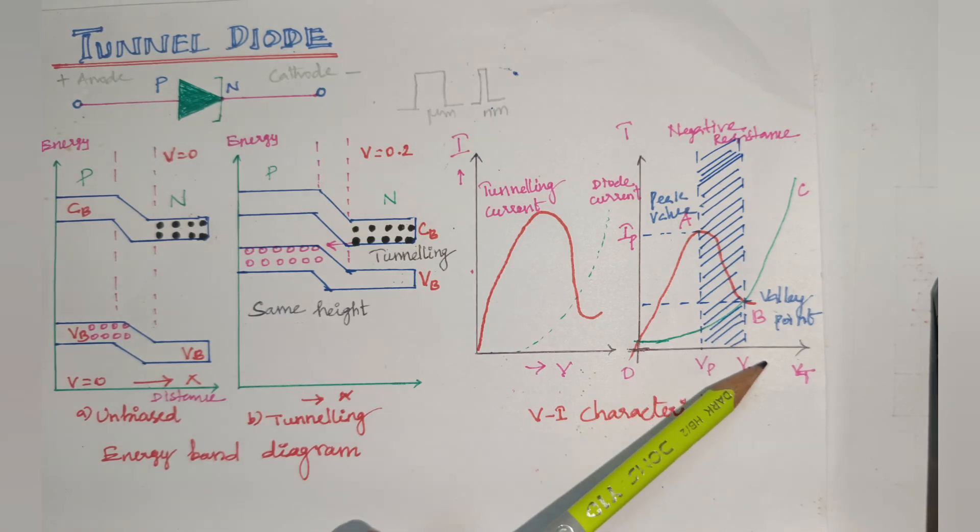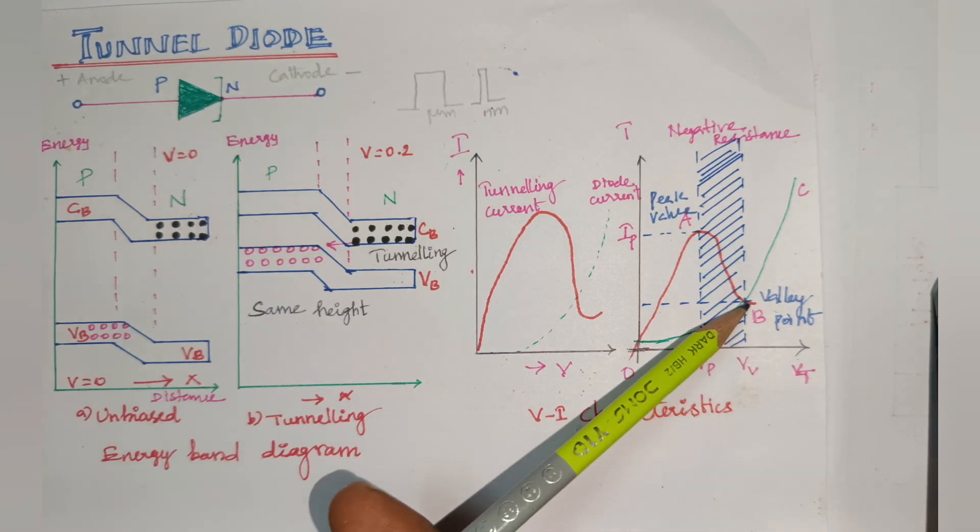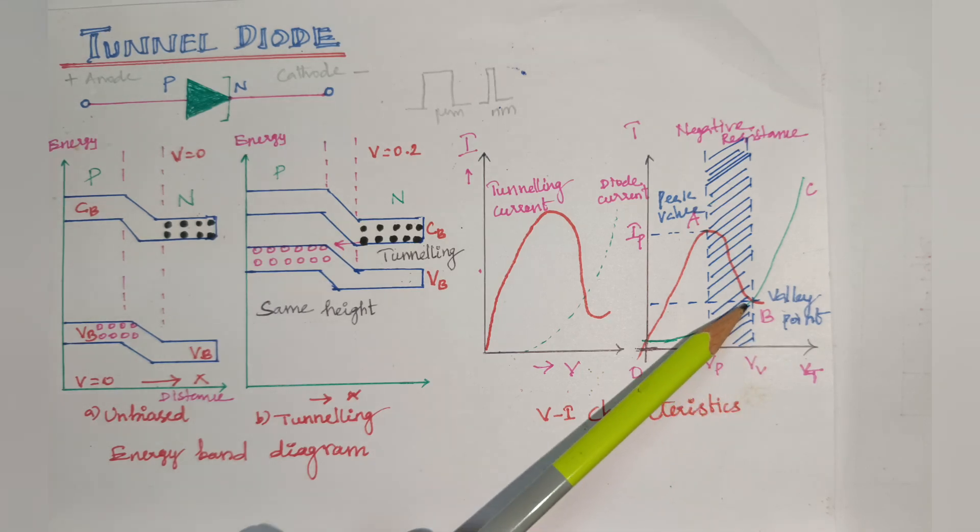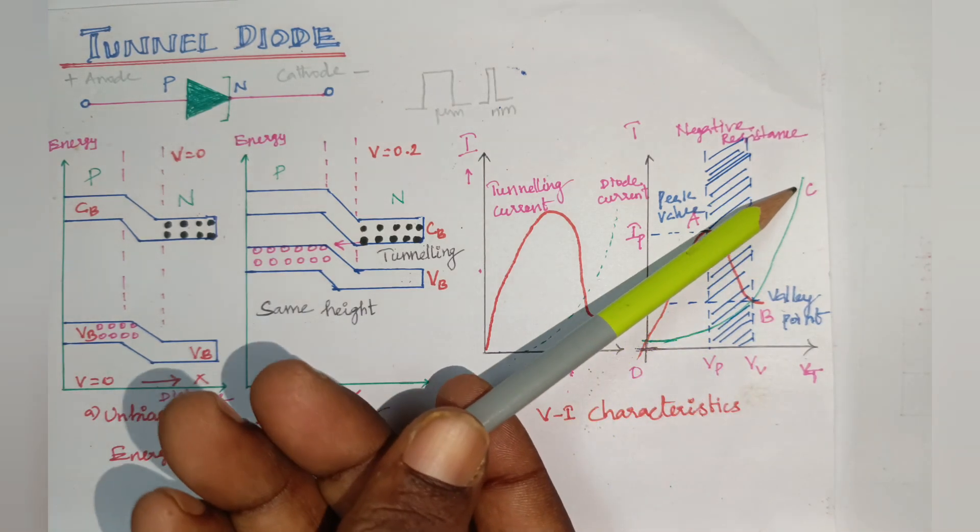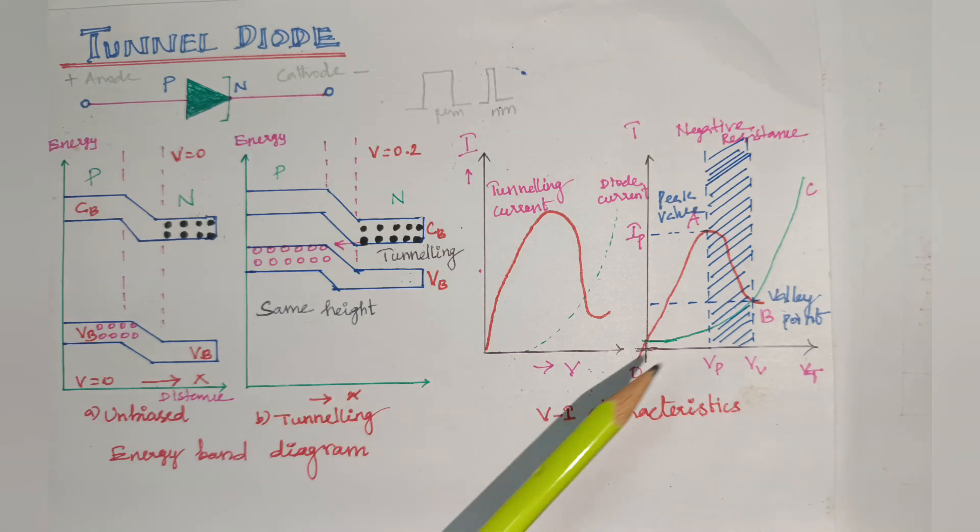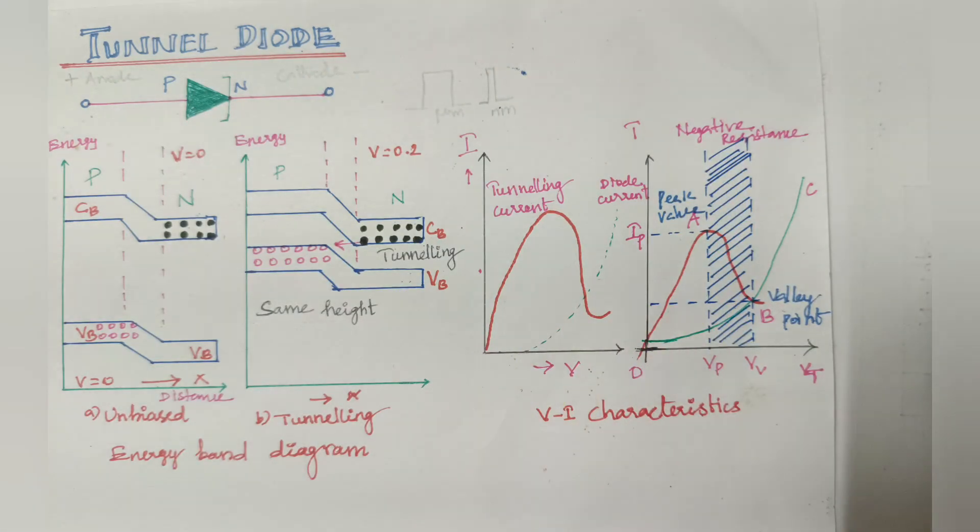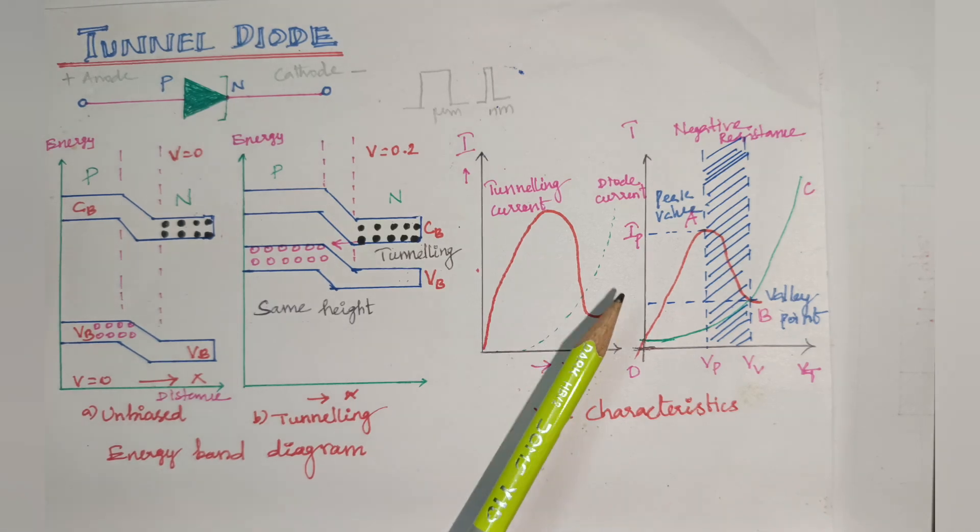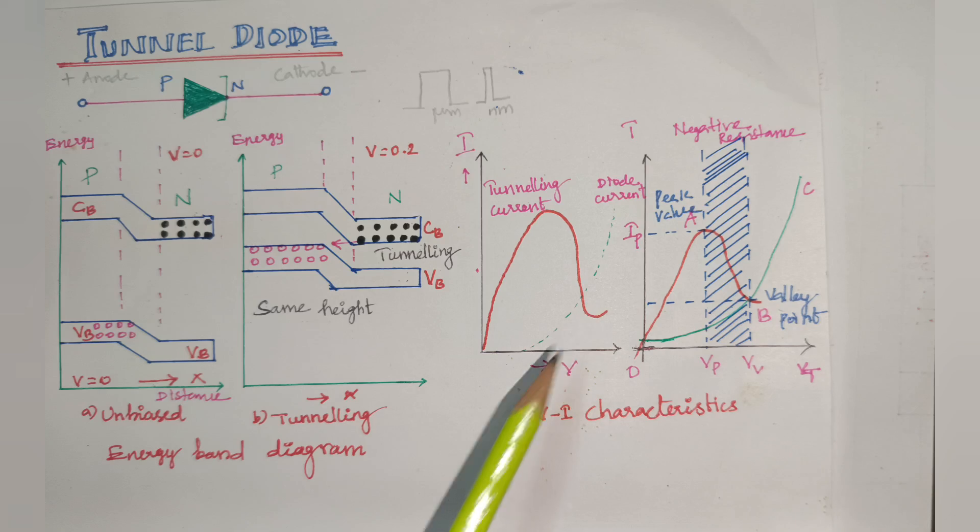After that, we increase the voltage, then current increases. For voltage greater than V-valley, we reach the valley point. Increasing beyond, the current also increases up to beyond the limit. So it acts as an ordinary junction diode. The characteristics of the tunnel diode are obtained by superimposition of the tunneling characteristics and the conventional diode characteristics.